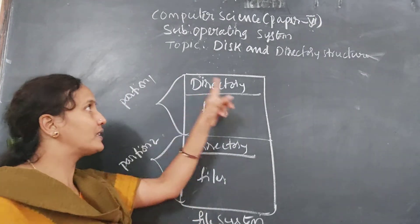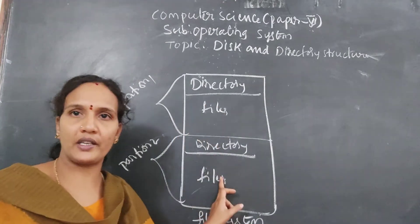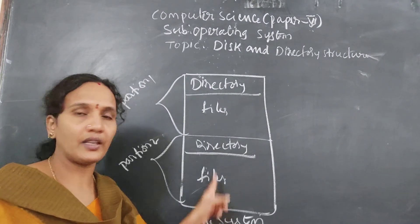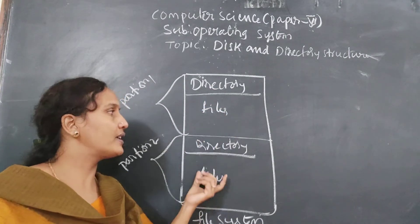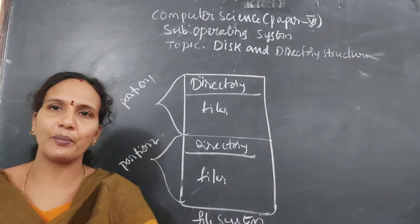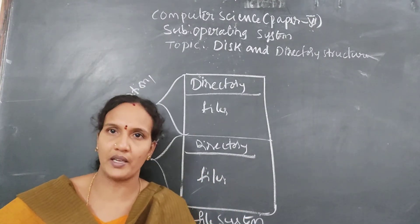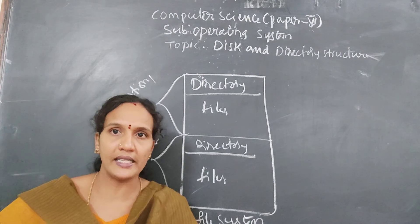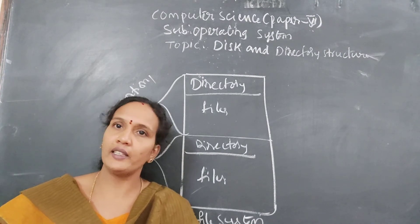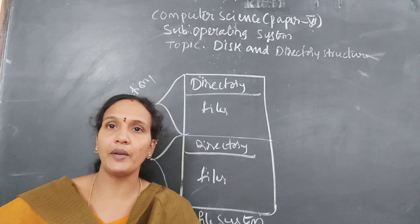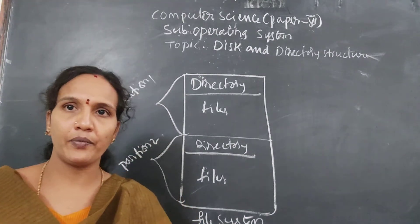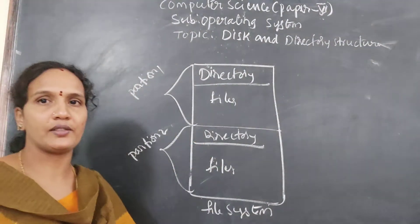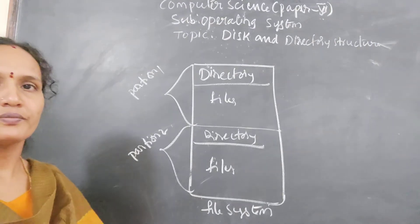The hard disk is divided into a number of partitions and each partition is called one directory. The directory contains a list of files and maintains complete information about the files it holds. Just take a screenshot of this — write the definition in the exam and draw this diagram.